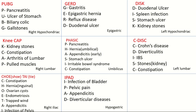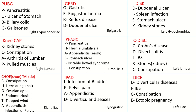For the left lumbar region, the mnemonic is CDISC. C is for Crohn's disease — you can also add ulcerative colitis; D is for diverticulitis; I is for irritable bowel syndrome; S is for kidney stones, since the left kidney is present here; and C is for constipation. Finally, for the left iliac region, the mnemonic is DICE: D is for diverticular diseases, I is for IBS, C is for constipation, and E is for ectopic pregnancy.